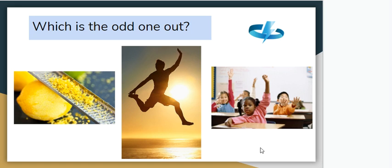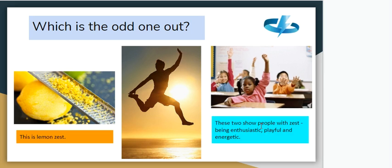I'll allow you to have a look at these three pictures and think which is the odd one out. I suggest you pause the video and think. Well, if I was going to pick out which one I think is the odd one out, it would probably be the picture of a lemon being grated, because that is called lemon zest. What we're talking about are what these other two pictures represent — being enthusiastic, playful, and energetic.